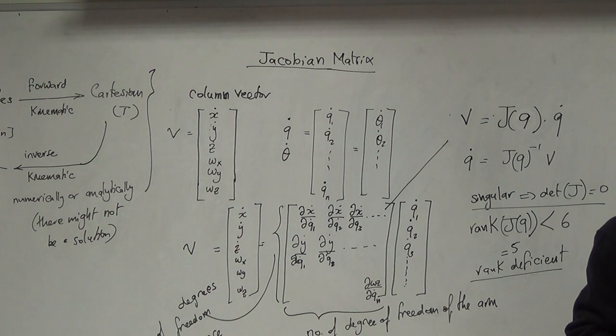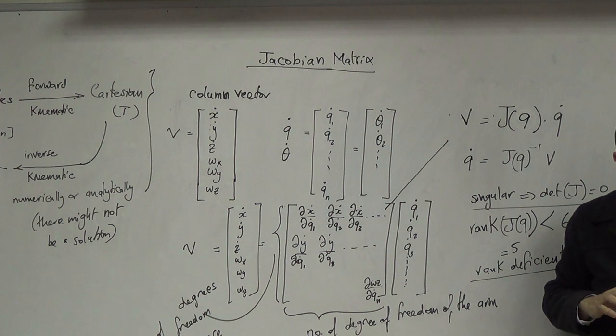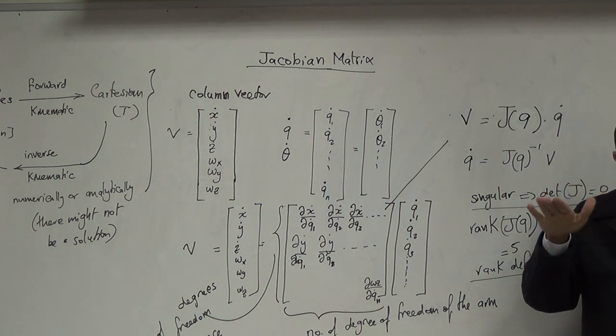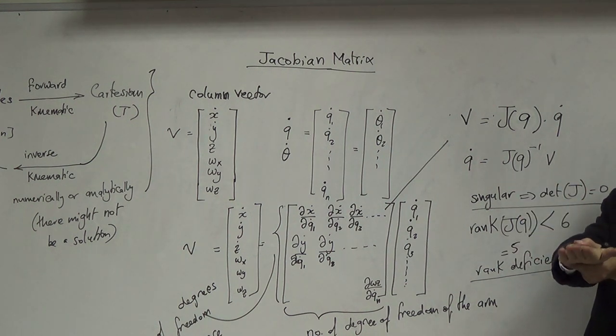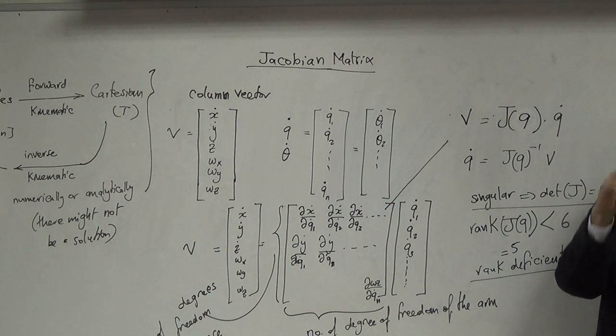مثلاً مثال عليها: لو رحت الآن عن Puma 560 وحطيت theta 5 = 0، إيش صار؟ رح يكون Z4 و Z6 aligned.